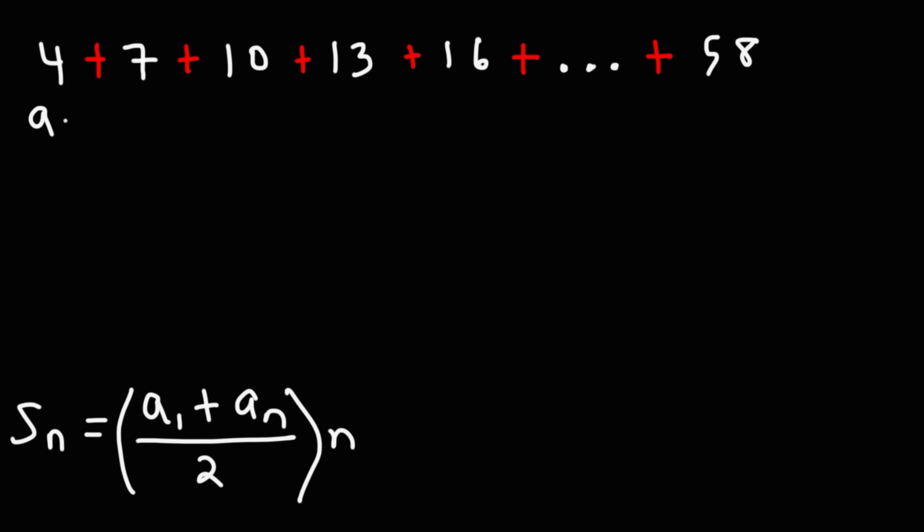Now, we know the value of the first term. It's a sub 1, that's 4. The last term, a sub n, is 58. What we don't know in this problem is the number of terms, n. So that's what we've got to find.